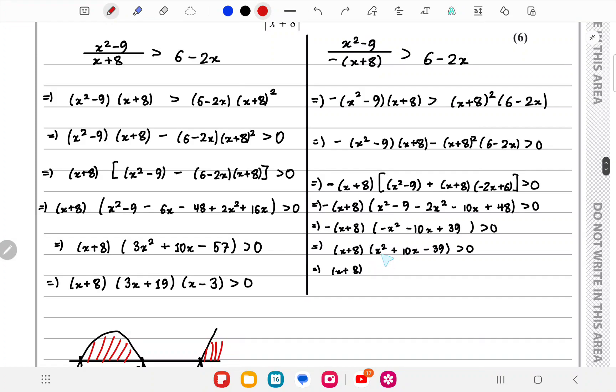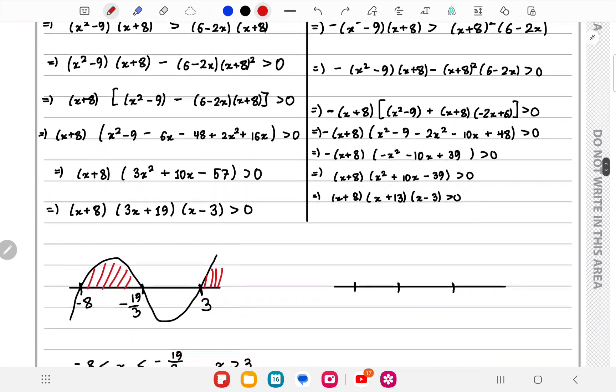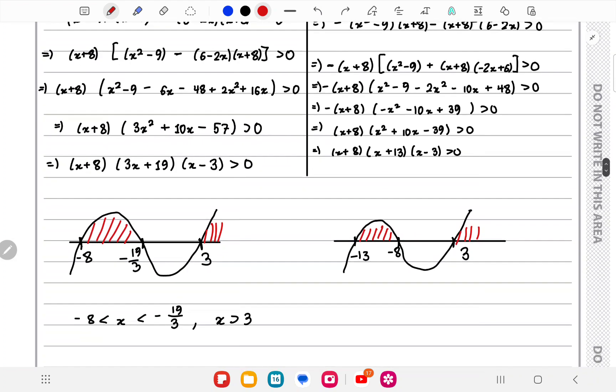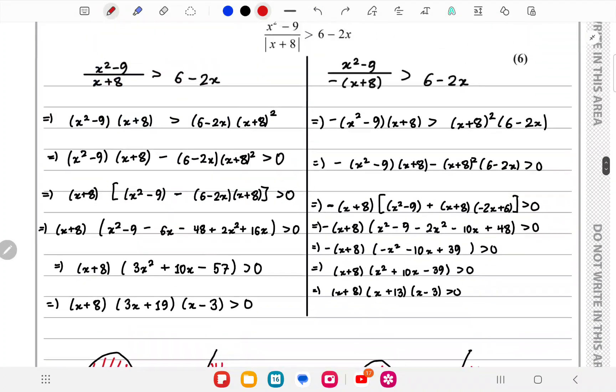If we break this quadratic down, we'll get (x+13)(x-3). So if we plot a graph of this, this is again plus x³ graph, so this shape. It would go like this. And we once again need the area over the horizontal line, over the x-axis, so this and this. Between -13 and -8, and x > 3. Since this is a modulus inequality, we'll take both cases.